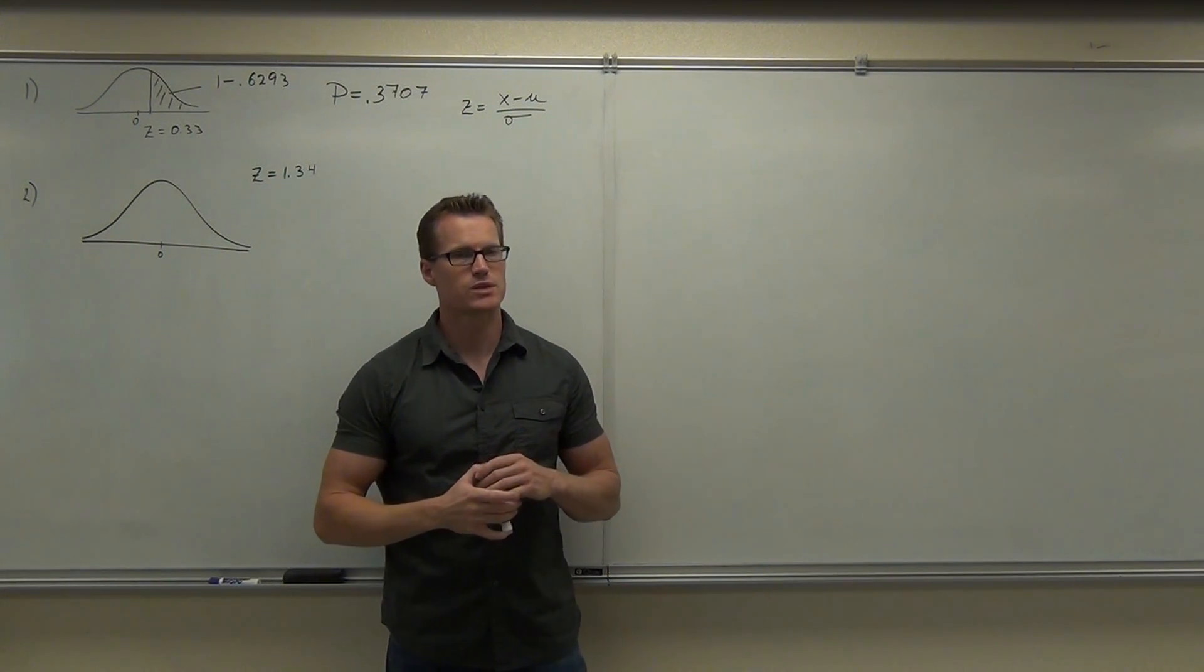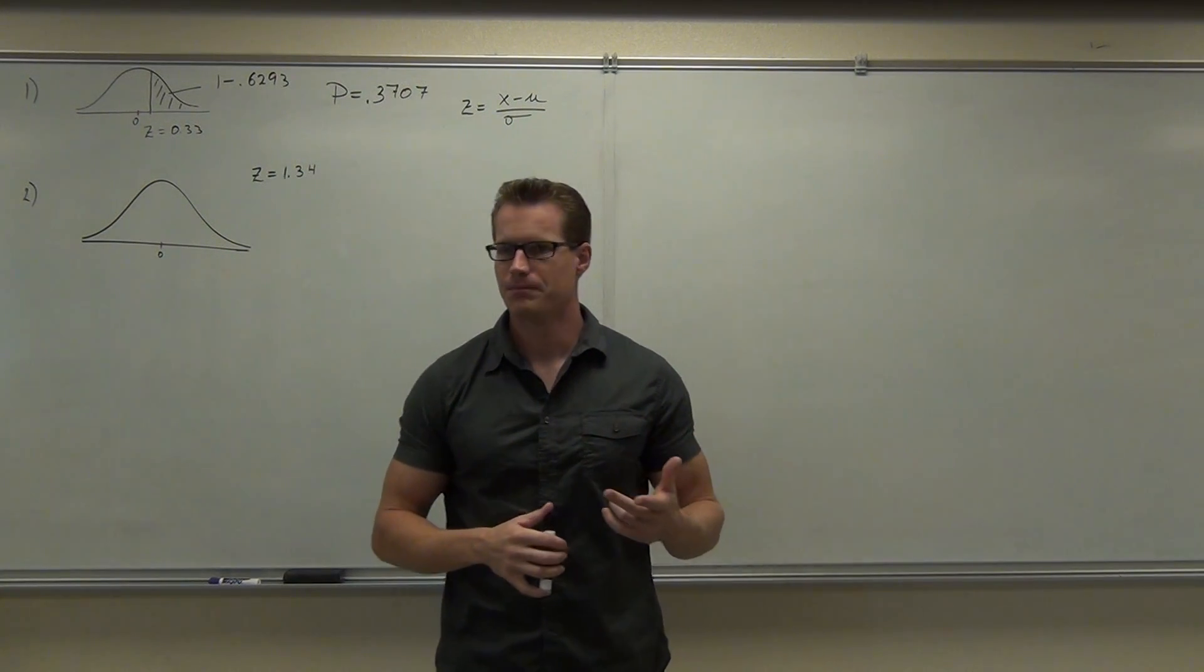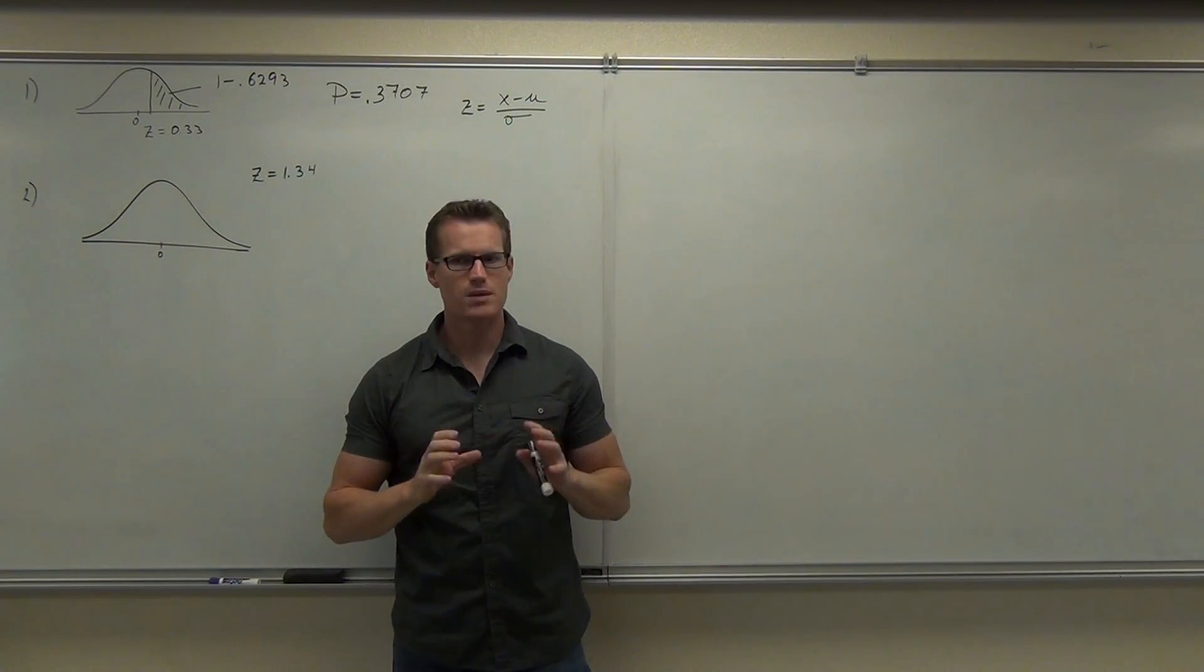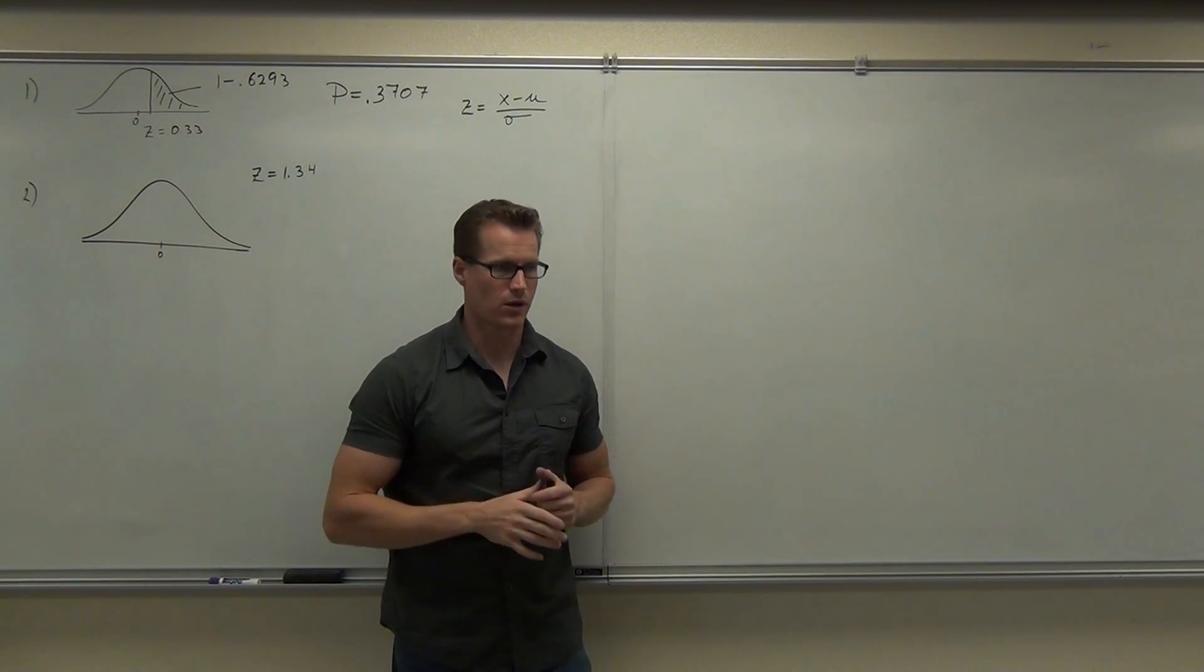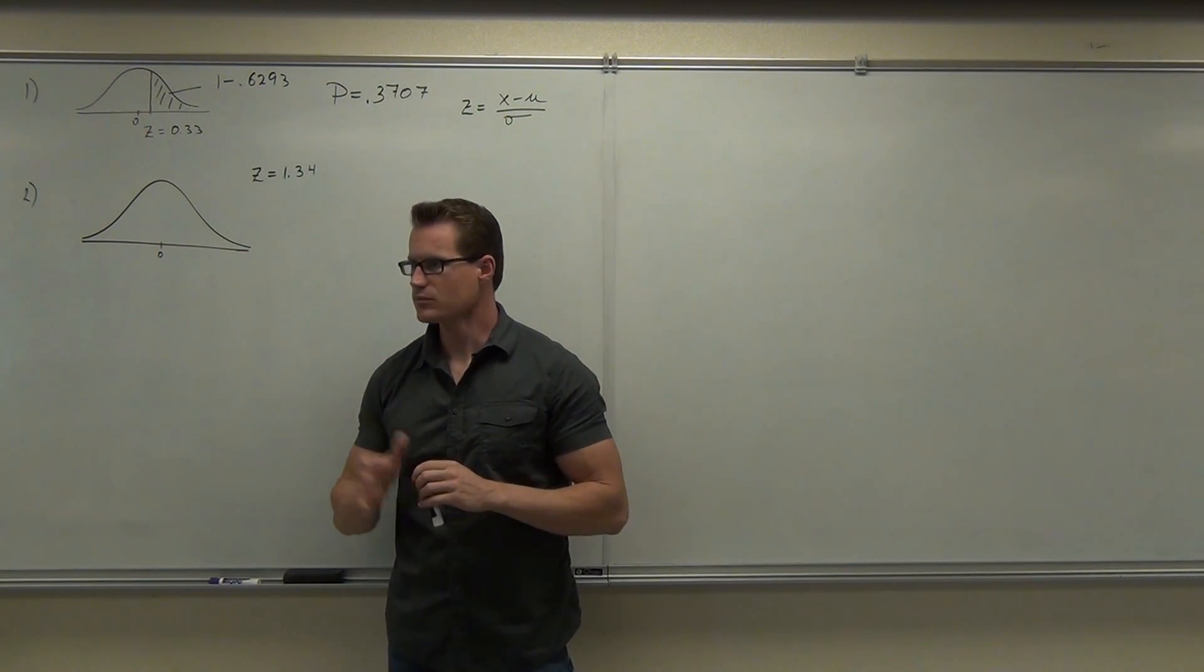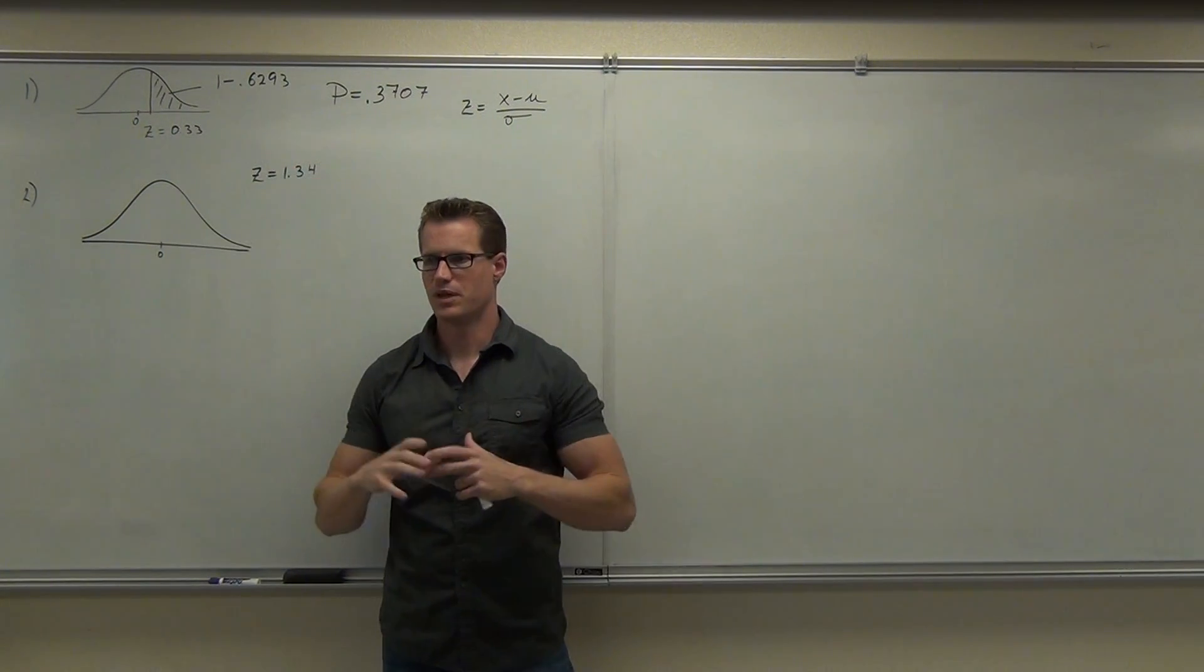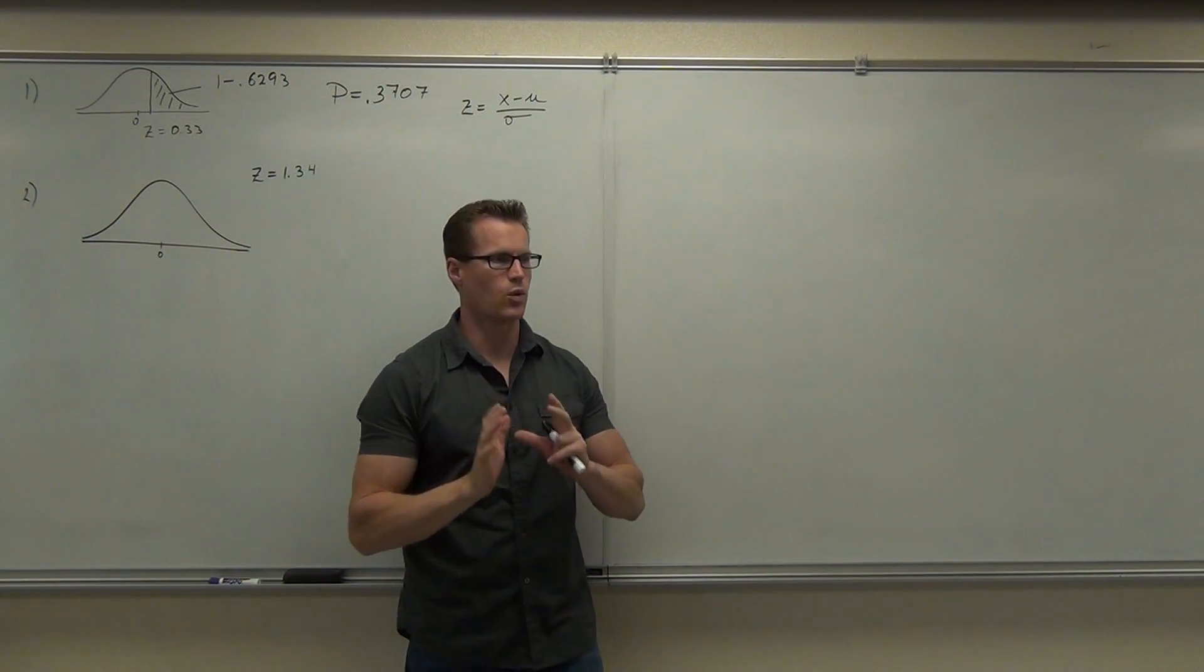Now, the next example is a little different. The next example said, suppose you had a group of 20 men. Suppose this population is normally distributed. What's the probability that the average weight for those 20 men will be more than 175? Here's why this is going to be more rare. Because we're going to find the area in a minute, it's going to be way less than 37. Is it more rare to find one person weighing a whole lot, or a whole group of people weighing a whole lot more than the mean?